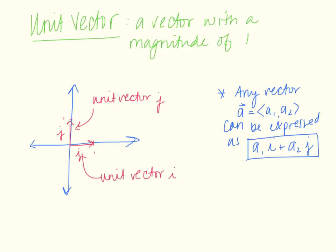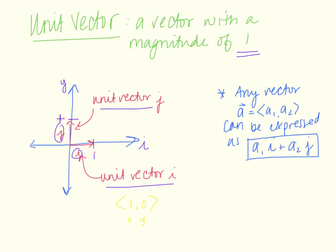The last thing we want to talk about is something called a unit vector. A unit vector, much like our unit circle with a radius of 1, is a vector with a magnitude of 1. The vector in the x-direction we call i, and the vector in the y-direction we call j. They both have a magnitude of 1. Unit vector i is the vector (1, 0) and unit vector j is the vector (0, 1). Any vector a with coordinates (a1, a2) can be expressed as a1 times unit vector i plus a2 times unit vector j.